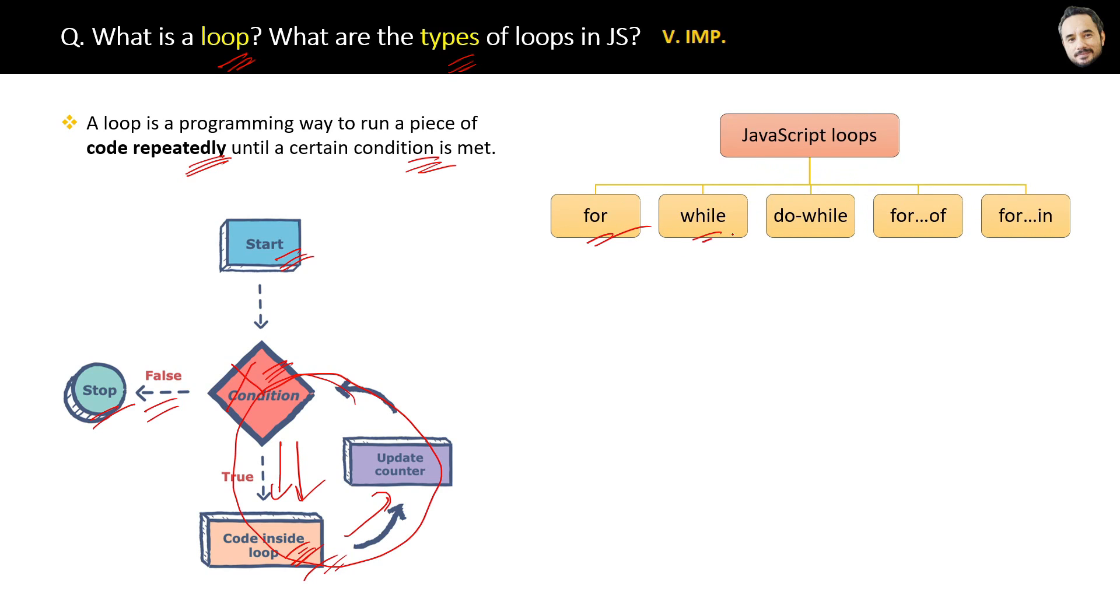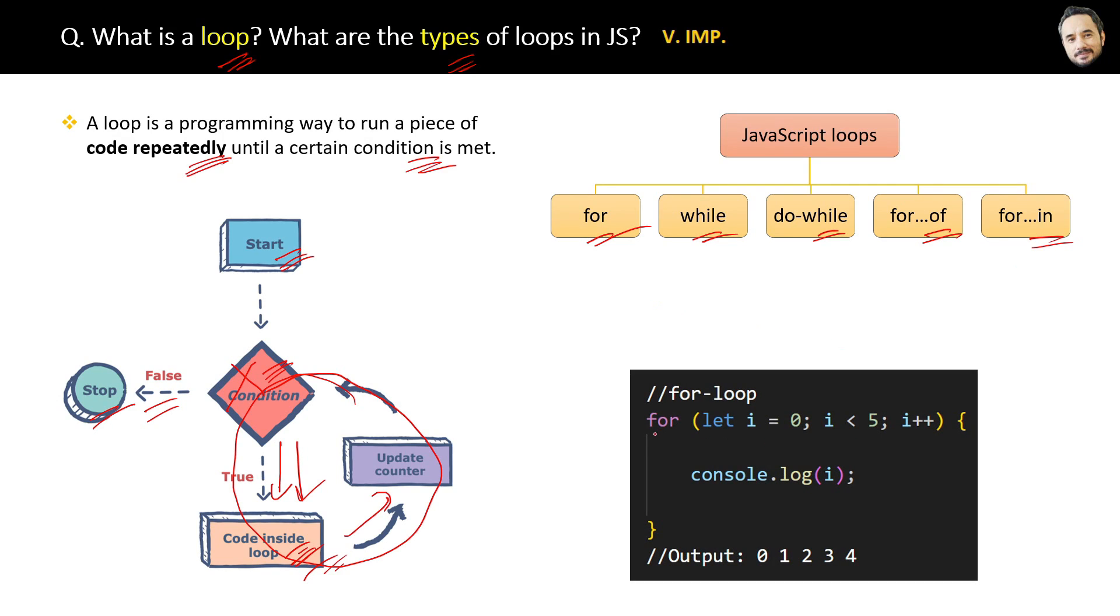For, while, do while, for of, and for in loop. Here is the simplest for loop code example. In a single line we are using the for keyword, and then inside the bracket we are first initializing a variable, then setting the condition for the loop, and then incrementing the variable i one by one, all set.